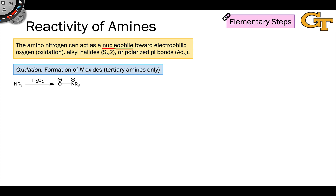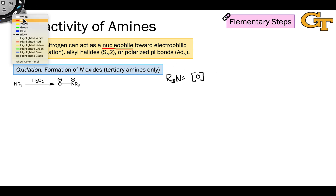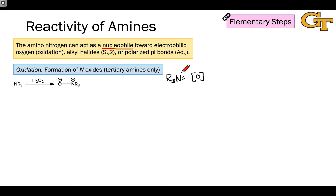One of the first things to note, and one of the actually less common reactions of amines used for synthetic purposes, is oxidation. This involves the formation of a functional group called an N-oxide through coordination of the amino nitrogen via its lone pair to some electrophilic source of oxygen, such as hydrogen peroxide or sodium percarbonate. In some cases, if the nitrogen is electron-rich and nucleophilic enough, this can just happen in open air.